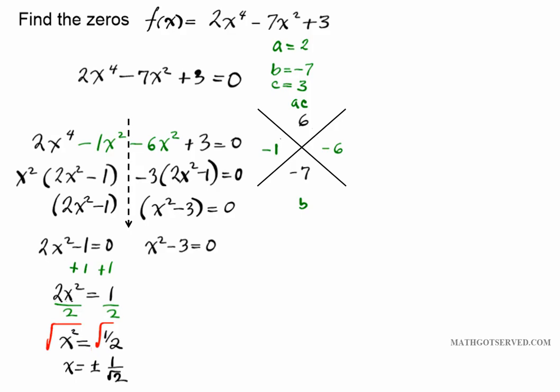Now how did that happen? When you take the square root of 1 half, when you root the numerator you get 1, and when you root the denominator you get root 2. Okay so those are the first two zeros of this polynomial function.